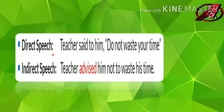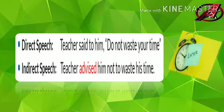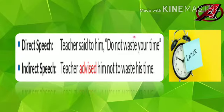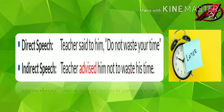Direct speech: 'Teacher said to him, don't waste your time.' Which type of sentence is this? 'Don't waste your time' — it's an advisory sentence. The teacher is advising not to waste your time. So simply, 'said to' is changed to 'advised.' Indirect speech: 'Teacher advised him not to waste his time.' Simple change. No other rules — no tense conversion is needed here. 'Said to' is converted to 'advised.' This is the only rule for imperative sentences.